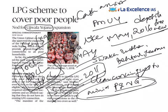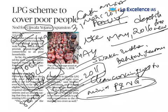Initially the government set a target to provide deposit-free LPG connections to five crore BPL households by 31st March 2019. Due to the scheme's huge success, the target was revised upward from five crores to eight crores with more budgetary allocation.